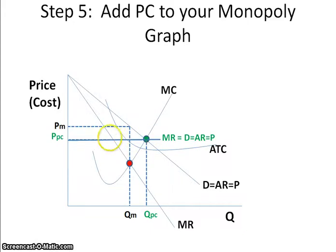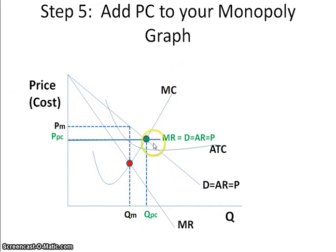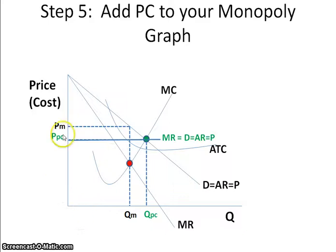The perfectly competitive firm is perfectly elastic, so MrDARP is a straight horizontal line coming off that intersection point, representing marginal revenue equals demand equals average revenue and price, giving us the perfectly competitive quantity. Please note that a perfectly competitive firm always charges a lower price and always produces more.